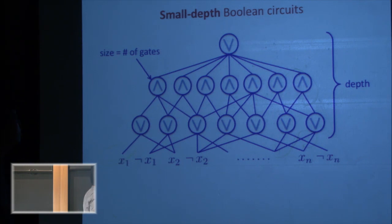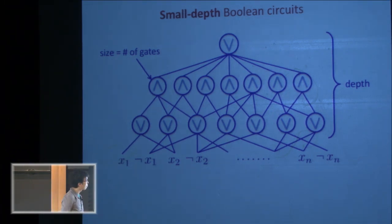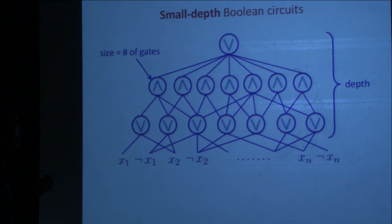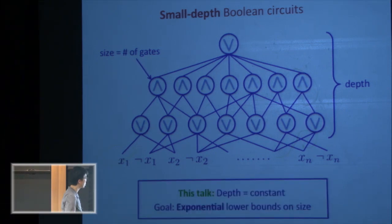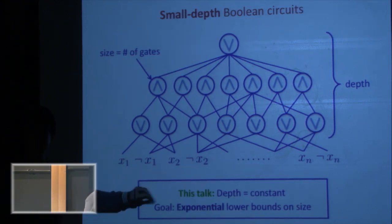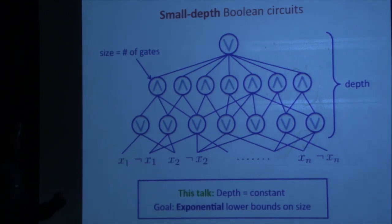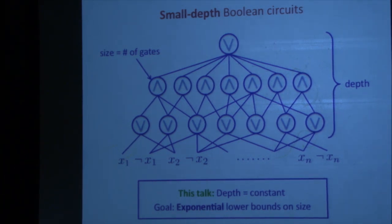This is the model for computation. We work with OR, AND, and NOT gates. We can assume negations are at the bottom, though that's not very important. We want explicit functions such that any such circuit is complex. There are two measures: depth, which is the number of layers, and size, which is the number of gates. We focus on small depth Boolean circuits, thinking of depth as a constant, say 100, or a slow growing function of n. The goal is to get very strong, exponential lower bounds on size.